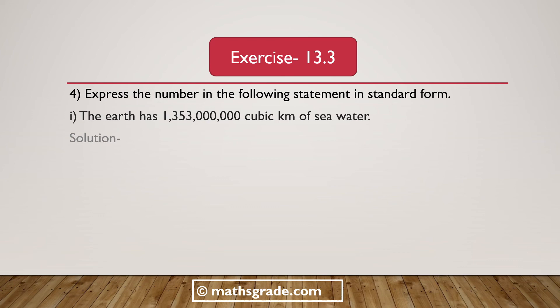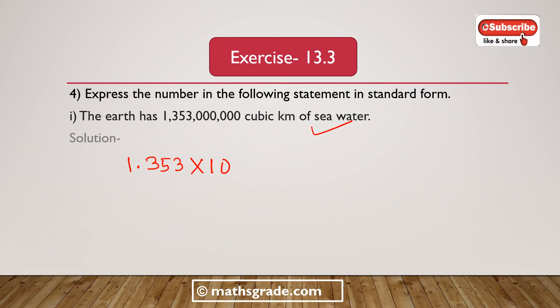Now part I. The Earth has 1,35,30,00,000 cubic kilometers of sea water. If we place the decimal point after the digit 1, it will be 1.353 multiplied with 10 to the power 9 cubic kilometers. So the Earth has 1.353 × 10⁹ cubic kilometers of sea water.